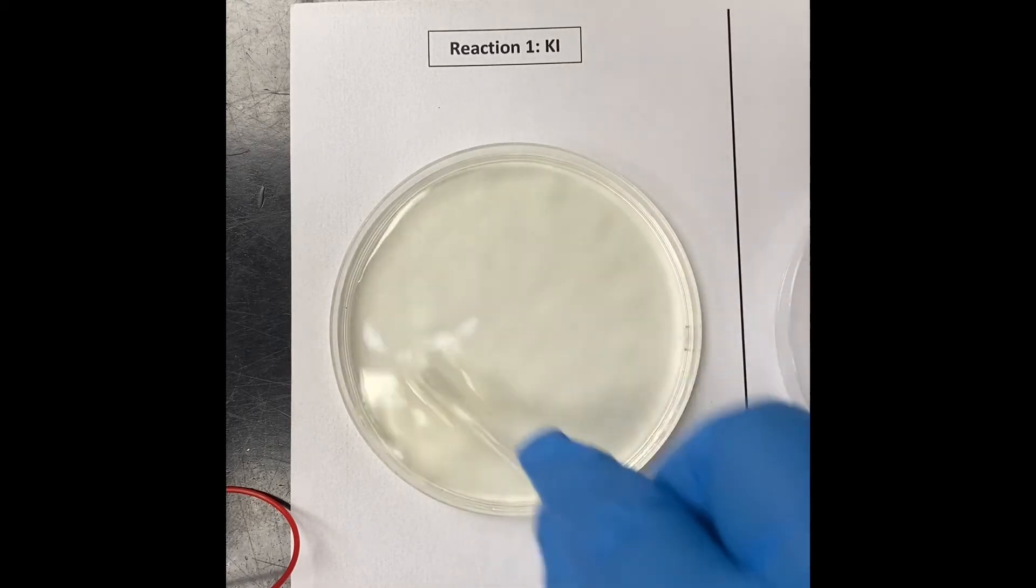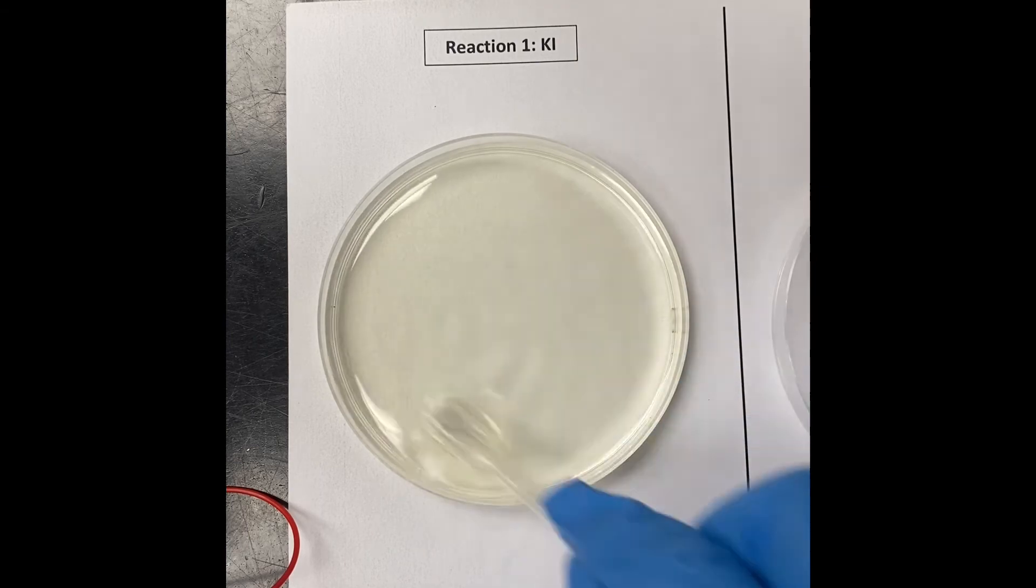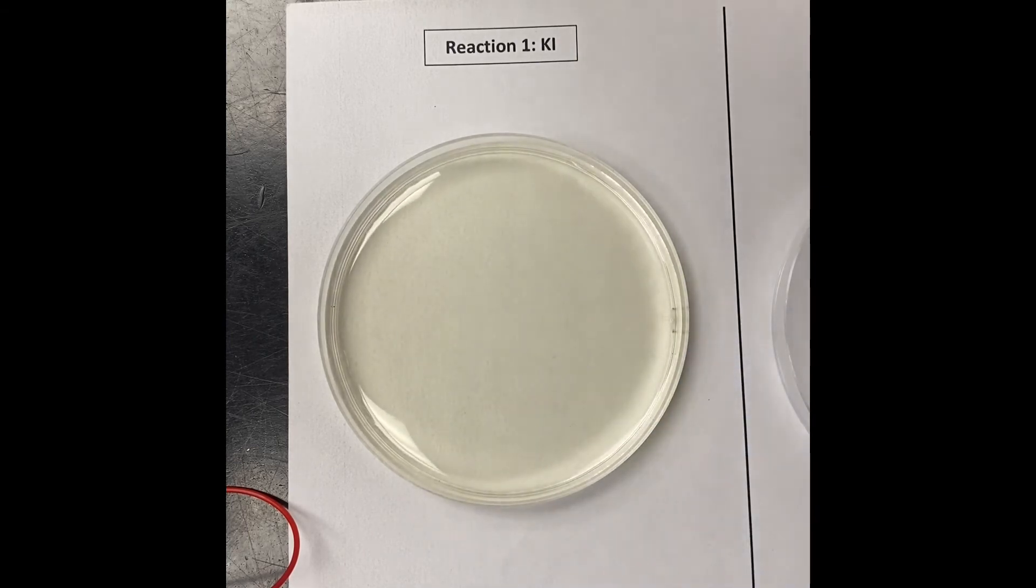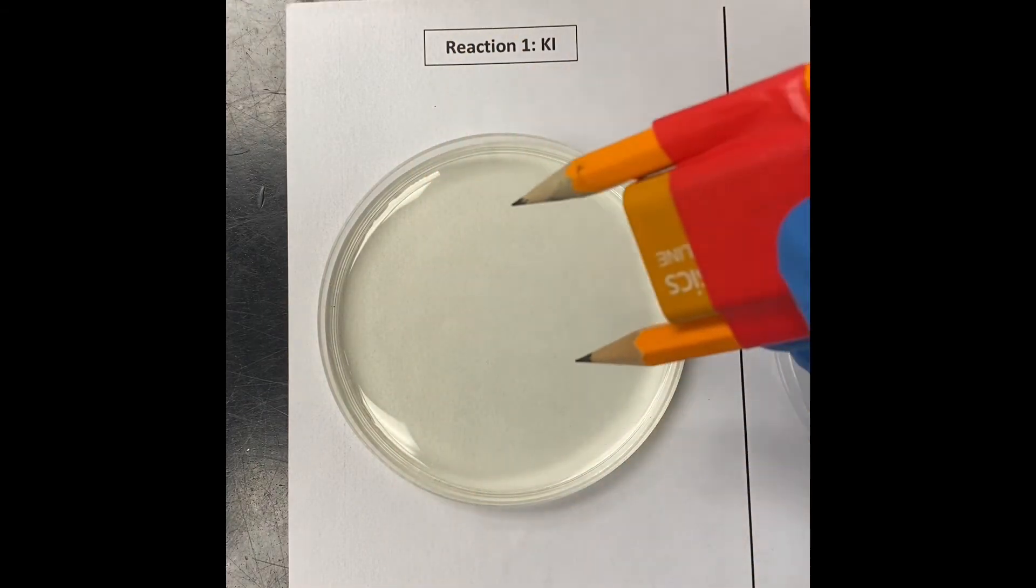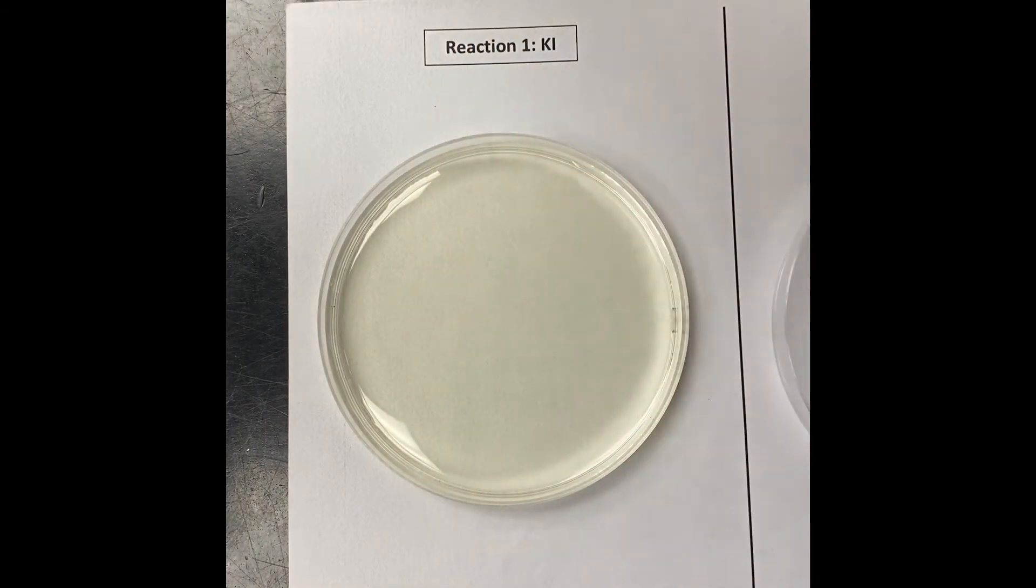So I'm just going to do a little bit of a stir here. I have potassium iodide with phenolphthalein indicator in here. So I'm going to take my electrolytic cell, or my battery, or my power cells, and I'm going to attach that. I'm going to dip that in the solution.